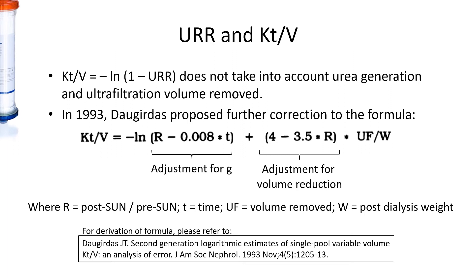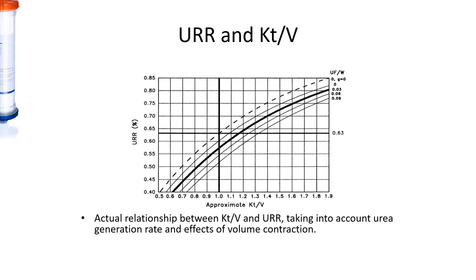So in 1993, Daugirdas proposed a further correction to the KT/V formula. You probably do not want to memorize this, but just know that it included an additional adjustment for G, which is the urea generation rate, and an additional adjustment for any volume reduction. When expressed graphically, this is the relationship of urea reduction ratio and KT/V. As the urea reduction ratio increases, KT/V increases exponentially. With the additional effect of clearance from ultrafiltration, the same urea reduction ratio will give us a slightly higher KT/V.